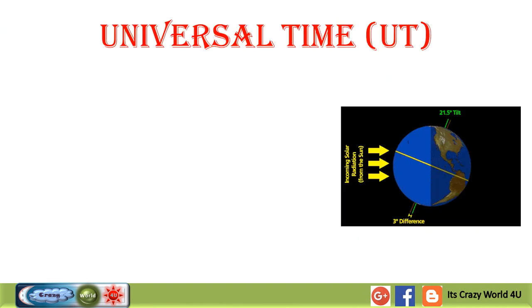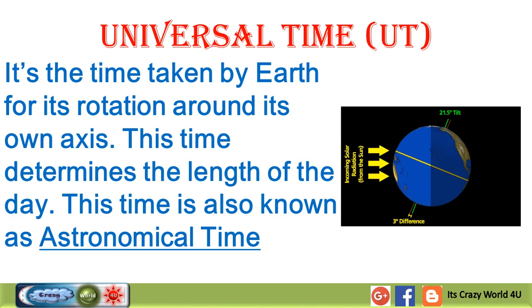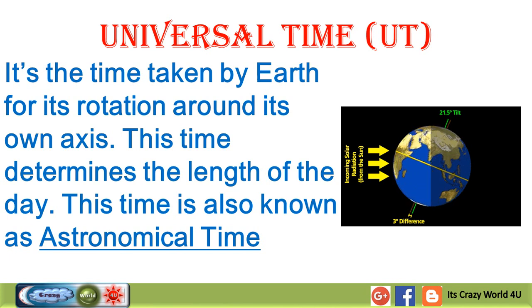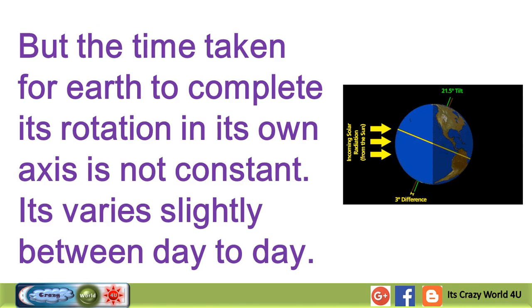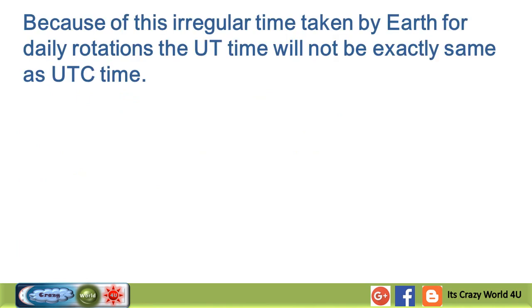Universal Time, UT, is the time taken by Earth for its rotation around its own axis — this time determines the length of the day and is also known as astronomical time. However, the time taken for Earth to complete its rotation on its own axis is not constant; it varies slightly from day to day. Because of this irregular rotation, the UT time will not be exactly the same as UTC time.